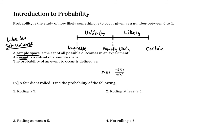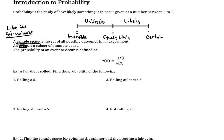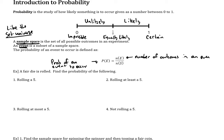So we have sample space as the full universe, and then the event is some small subset of that universe. The probability of an event to occur is defined using set notation: it's the cardinal number of the event — the number of outcomes in that event — over the number of outcomes in the sample space.